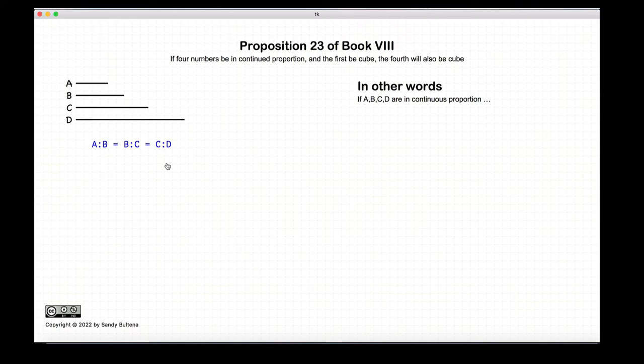Now this proposition states that if we have four numbers in continuous proportion, and if the first one is a cube, then the last one is also a cube.